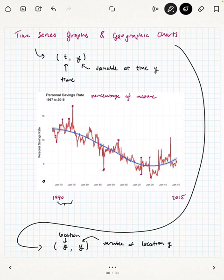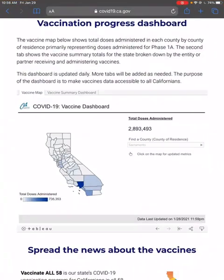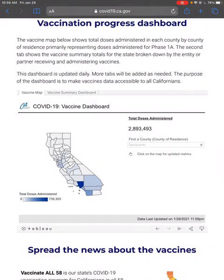While we can organize this however we want, the natural way to represent a geographic chart is to annotate a map. So I'm going to take us to a live website right now.